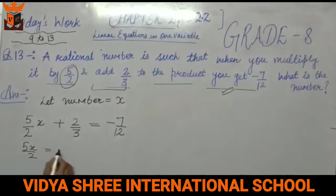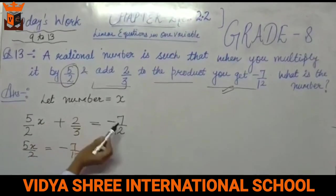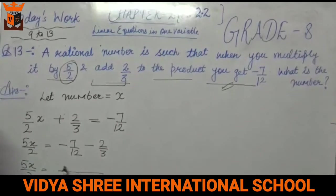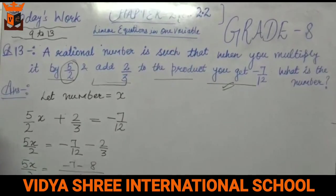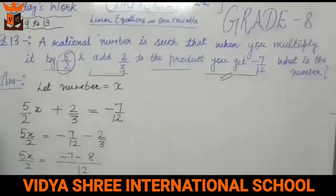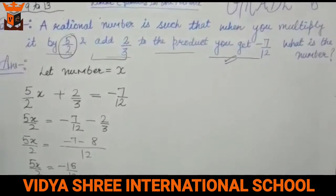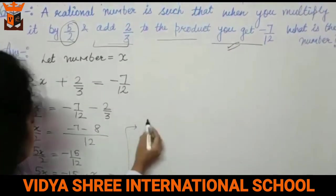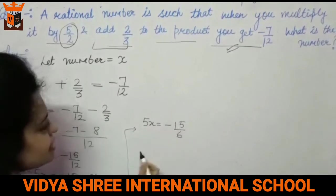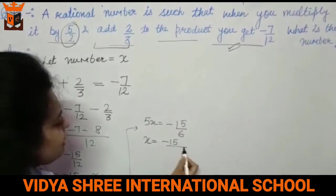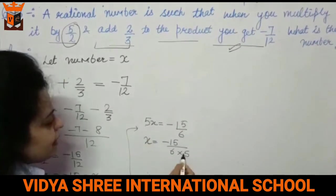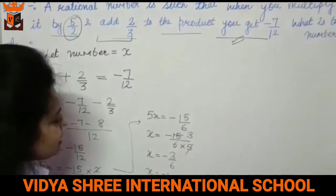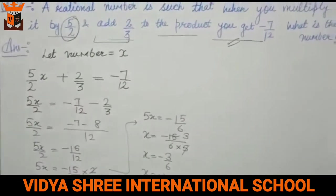So we solve: 5x/2 plus 2/3 equals minus 7/12. Shifting 2/3 to the right side gives 5x/2 equals minus 7/12 minus 2/3. Finding LCM of 12 and 3 gives 12; so minus 7/12 minus 8/12 equals minus 15/12. So 5x/2 equals minus 15/12. Then 5x equals minus 15/12 times 2, which is minus 15/6. So x equals minus 15 divided by 6 divided by 5, giving x equals minus 3/6, which simplifies to minus 1/2. I hope this question is clear to you.